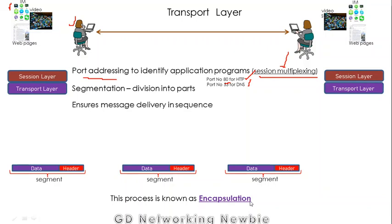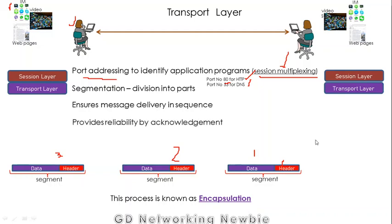The transport layer also ensures message delivery in the correct sequence. When it creates segments and adds headers, the header contains a sequence number. If segments arrive at the destination out of order, the transport layer rearranges them into the original sequence. It also provides reliability through acknowledgements — the receiver acknowledges how many segments it has received. Additionally, it controls flow, managing how much data should be sent based on the medium's capacity.